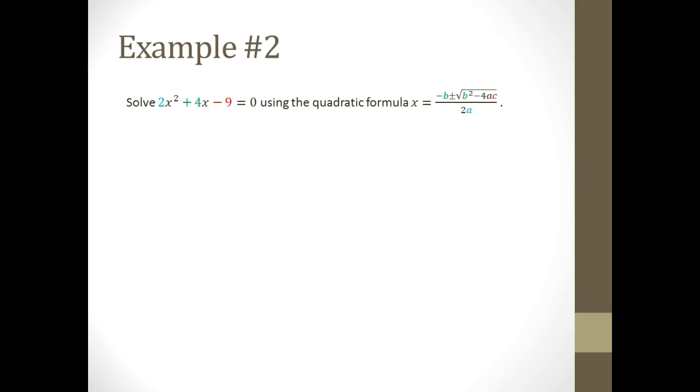Okay, let's look at example 2. Here, a is 2, b is 4, and c is negative 9. Now, here's what it looks like when we substitute into the quadratic equation.